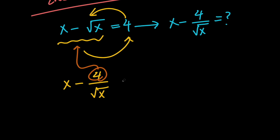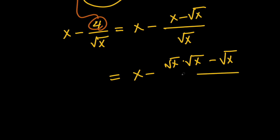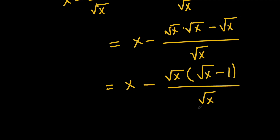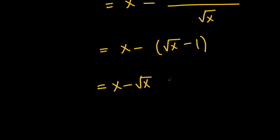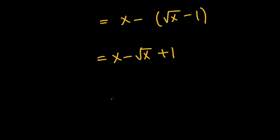So our expression x minus 4 over root x becomes x minus (x minus root x), all divided by root x. This simplifies to x minus root x times root x minus root x, divided by root x. We can factor out a root x on the top, giving us root x times the quantity (root x minus 1), divided by root x. This simplifies to root x minus 1, and then x minus root x plus 1. Since x minus root x equals 4, this equals 4 plus 1, which equals 5.